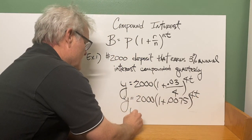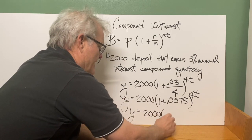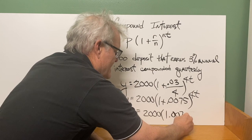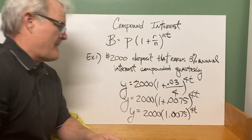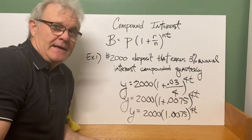One last thing that you would do on this would be Y equals 2,000 times. You would add that up. It's just 1.0075 raised to the 4T. This would be the solution that the Chromebook would want, your assignment.